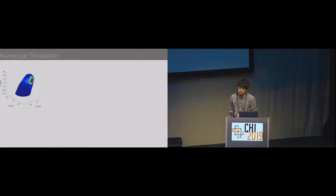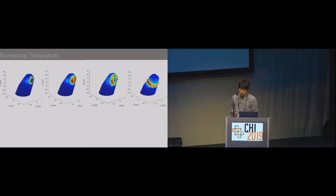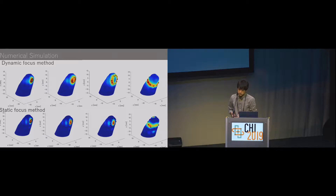Let's look at the transition of the pressure distribution when the position of the surface changes. As the finger touches the surface, the pressure distribution on the finger spreads. Even when the finger completely penetrates the surface, the pressure distribution is shaped around it, so the user can recognize the position of the surface relative to their finger. This may enhance the tangibility of the object. For comparison, we show the distribution when only one focus is generated at the center of the ellipse. In this case, the pressure distribution does not spread as the finger touches the surface. I call these two feedback methods the dynamic focus method and the static focus method respectively.